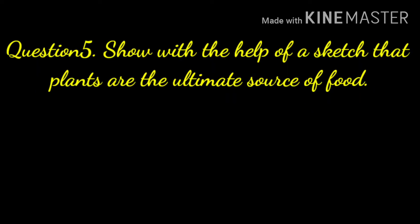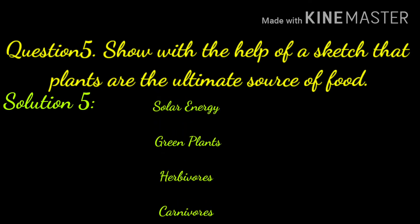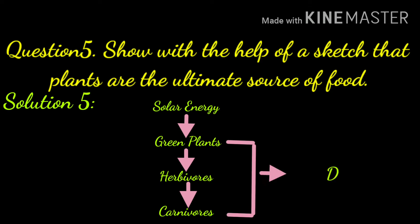Question number five: show with the help of a sketch that plants are the ultimate source of food. Answer: solar energy is taken by green plants; green plants are eaten by herbivores; herbivores are eaten by carnivorous animals; and all three of them are decomposed by decomposers.